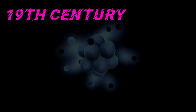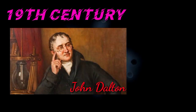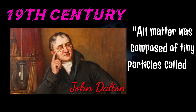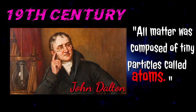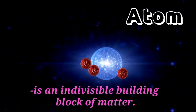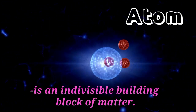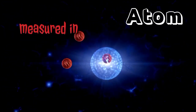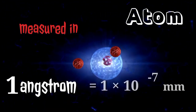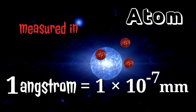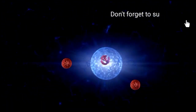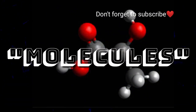In the 19th century, John Dalton, an English chemist, said that all matter was composed of tiny particles called atoms. An atom is an indivisible building block of matter. Atom is measured in angstroms, wherein one angstrom is a unit of length equal to one-tenth millionth of a millimeter. When atoms are combined in a specific arrangement, it is called molecules.